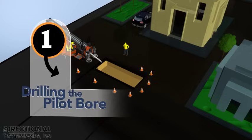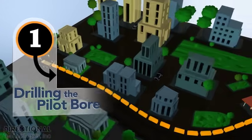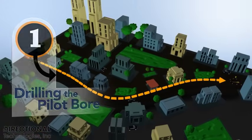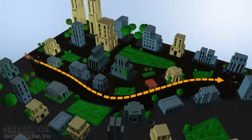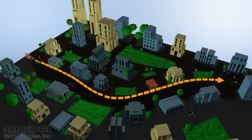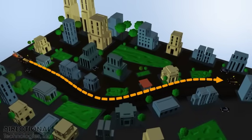Before the directional drilling begins, the directional drilling crew pre-plans the bore path to carefully avoid obstructions such as other underground utilities.